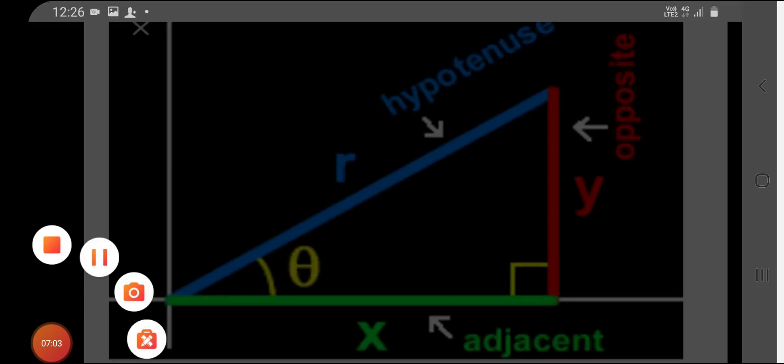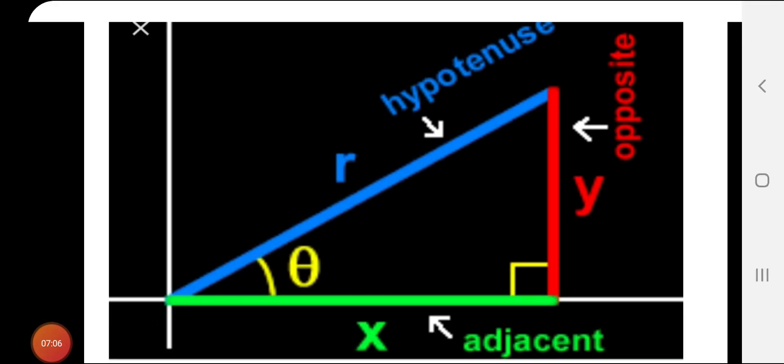Dear students, this is the thing which is very important to learn in this chapter, that which side will be considered as hypotenuse, which will be the opposite side and which will be the adjacent. So, once again, the side opposite to 90 degree is considered as hypotenuse. This is always fixed. Then the side opposite to the angle will be considered as opposite side and the third remaining side will be considered as adjacent side.